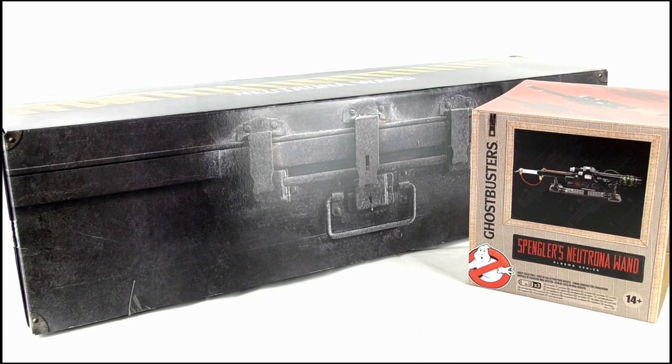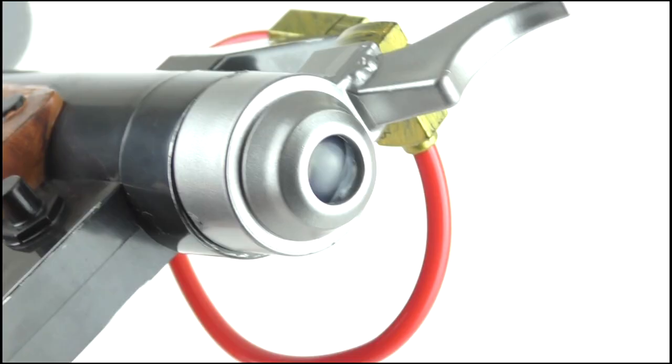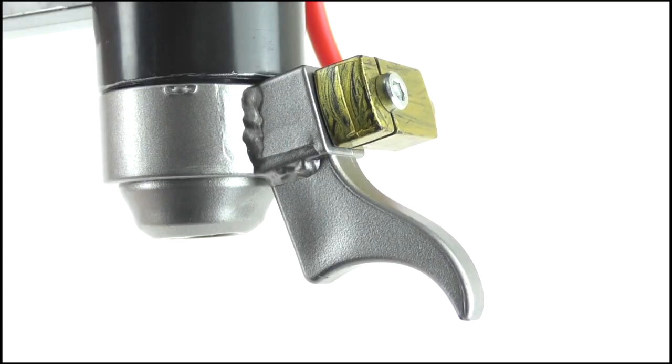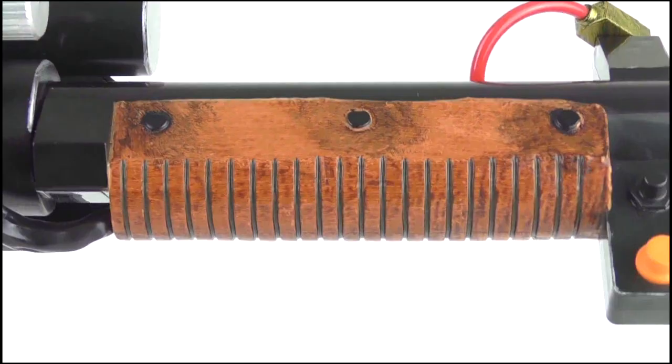So here it is, the Spengler Neutrona Wand, and initially it appears to be fantastic. The tip of the barrel is silver and looks somewhat plastic and cheap, but I like the attention to detail of the grooved section and the wells used to attach it. Likewise, the red wire looks to be attached accurately through these golden connectors, with a black strut at the far side containing black and orange buttons. The main barrel looks substantially different to the original.